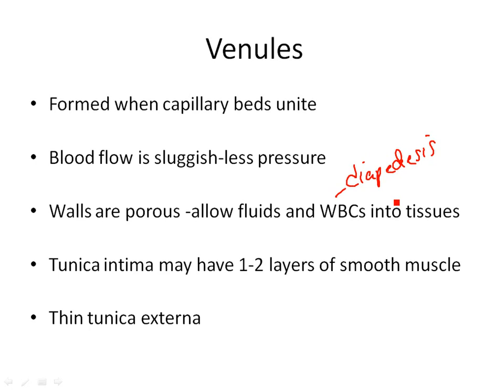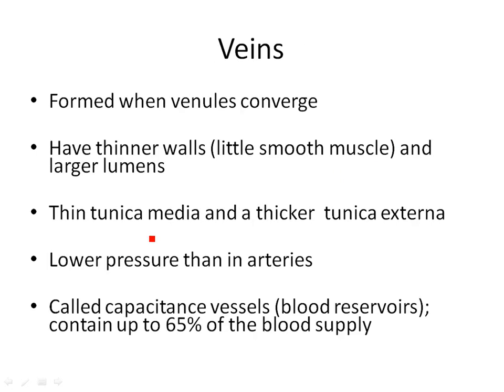The tunica intima in venules is only one layer of endothelial cells. The tunica media may have one to two layers of smooth muscle, and then they have a very thin tunica externa or adventitia — just a little connective tissue layer. These vessels are not active in vasoconstriction and vasodilation; they're just trying to get the blood back to the heart.